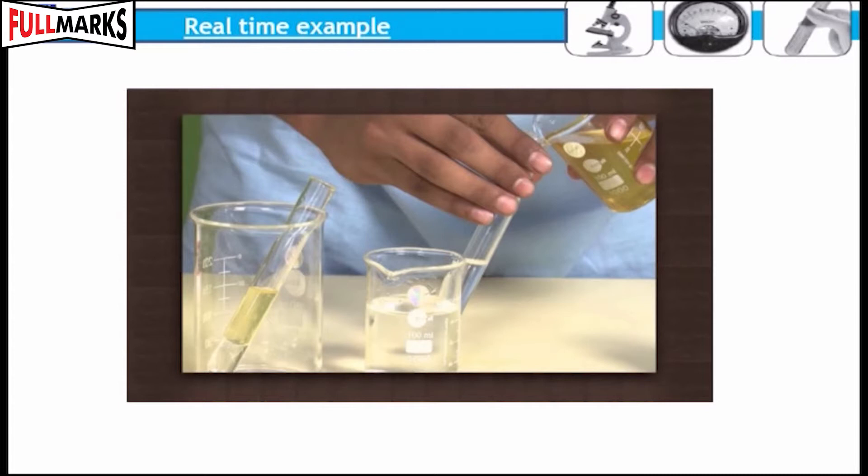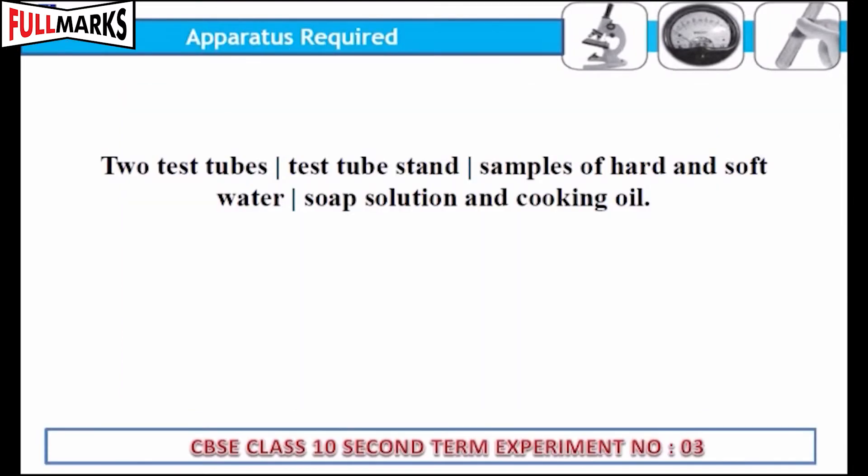Precipitation occurs with calcium and magnesium salts, making hard water unsuitable for washing. Apparatus required: two test tubes, test tube stand.